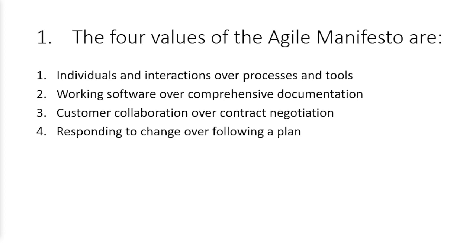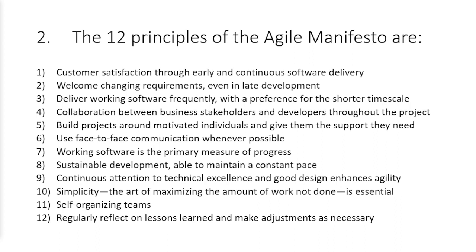That's how I expected you to go through the values — not in those same words, but in your own way. Question two: the 12 principles of the Agile Manifesto, summarized. Customer satisfaction through early and continuous delivery of valuable product; welcome changing requirements; deliver working software frequently; collaborate with the business daily; build projects around motivated individuals; use face-to-face communication where possible. Working product is the primary measure of progress — not just software, but hardware and other products and services too.